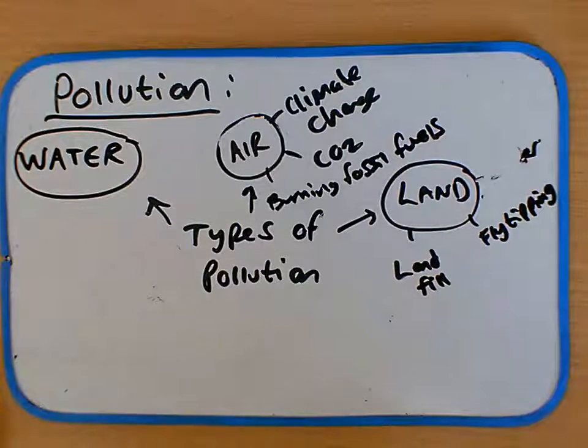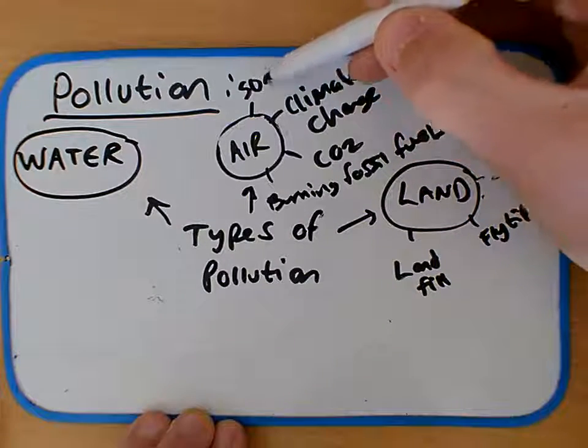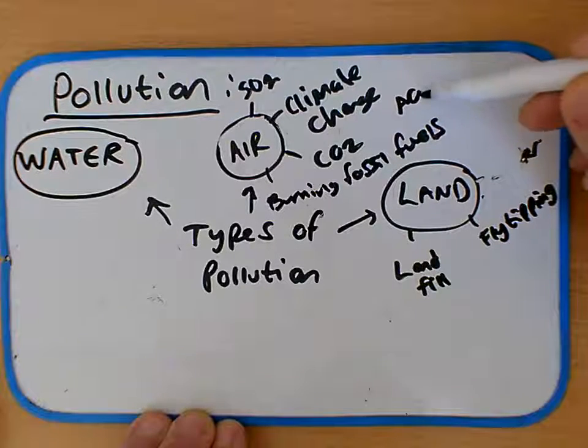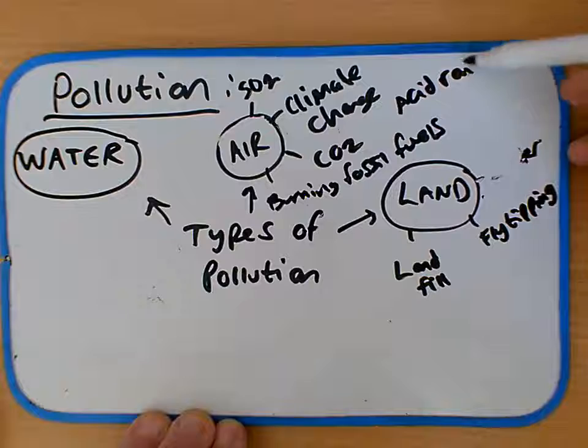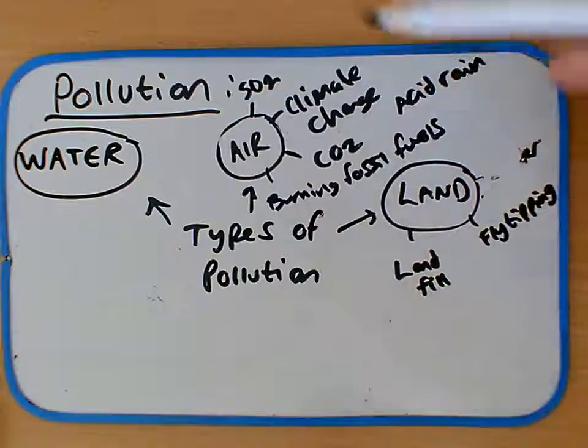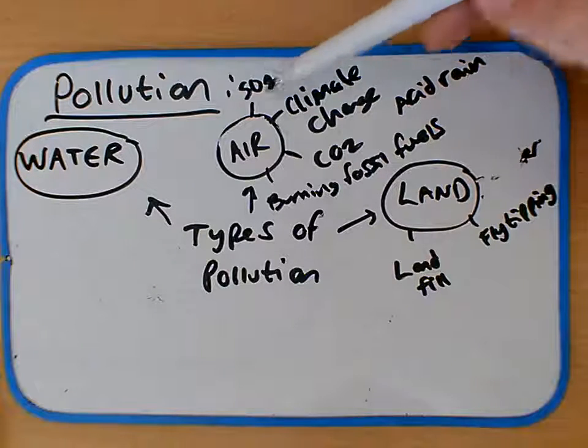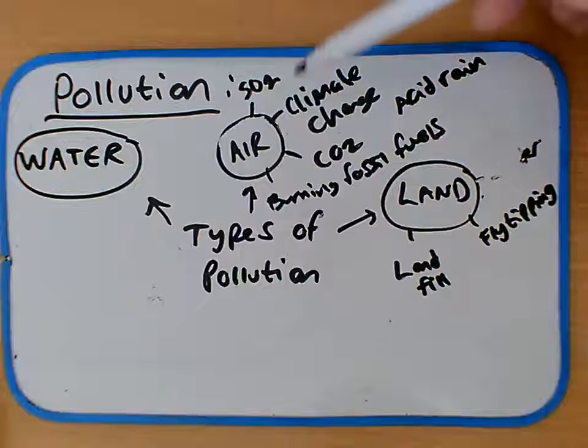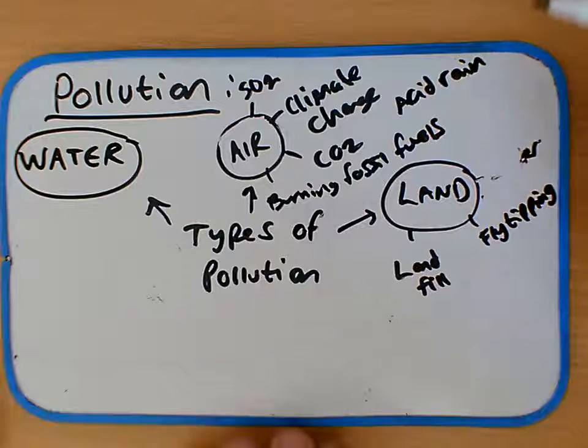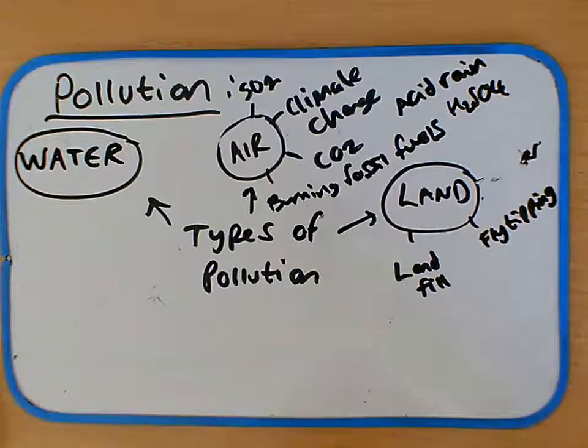There are other things as well in terms of air pollution you've probably come across in the past. Things like sulfur dioxide, which actually can lead to acid rain. So when we burn fossil fuels, we don't just release carbon dioxide. We actually release sulfur that's trapped in the coal, the oil, and the gas. And that forms sulfur dioxide, which when it interacts with the water in the atmosphere, forms acids like sulfuric acid, which can cause their own problems.